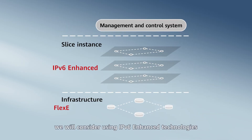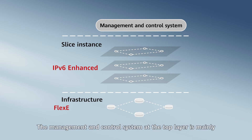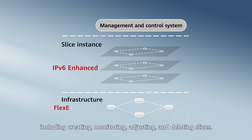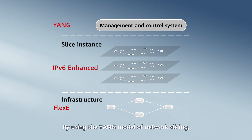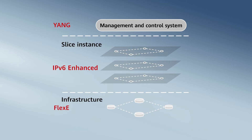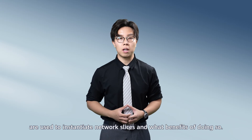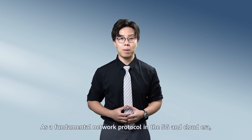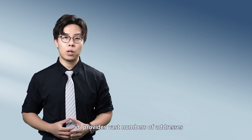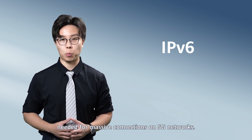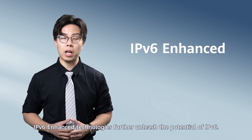At this layer, we will consider using IPv6 enhanced technologies to instantiate network slices. The management and control system at the top layer is mainly used to manage the life cycle of network slices, including creating, monitoring, adjusting, and deleting slices. By using the YANG model of network slicing, this layer enables interconnections between centralized interfaces and users. Let's now take a closer look at how IPv6 enhanced technologies are used to instantiate network slices and the benefits of doing so. As a fundamental network protocol in the 5G and cloud era, IPv6 provides vast numbers of addresses needed for massive connections on 5G networks. IPv6 enhanced technologies further unleash the potential of IPv6.